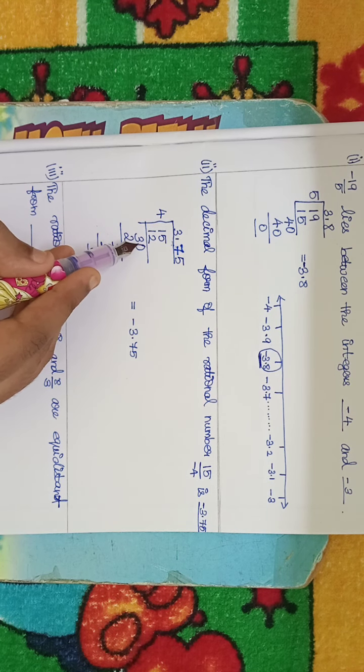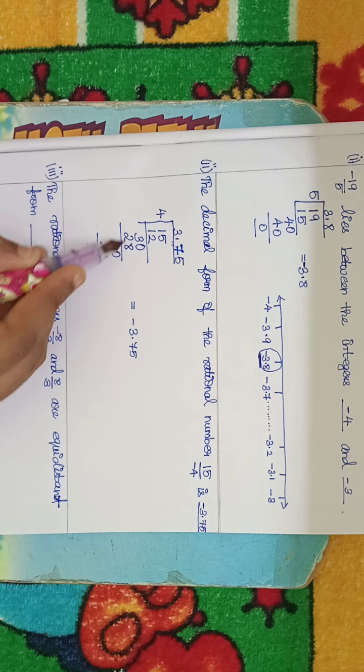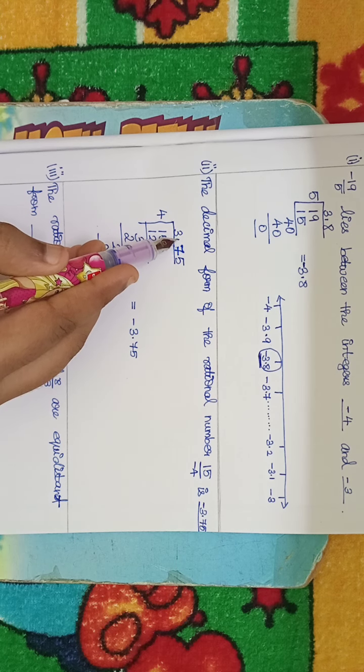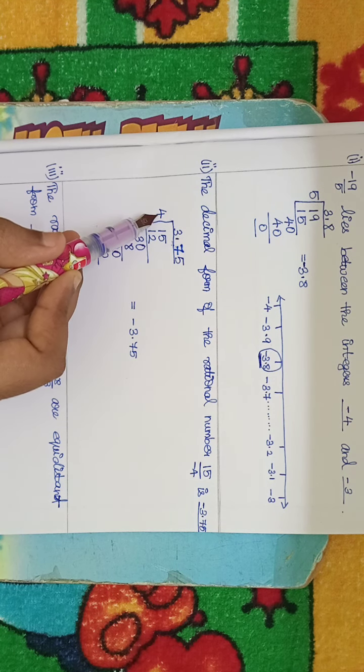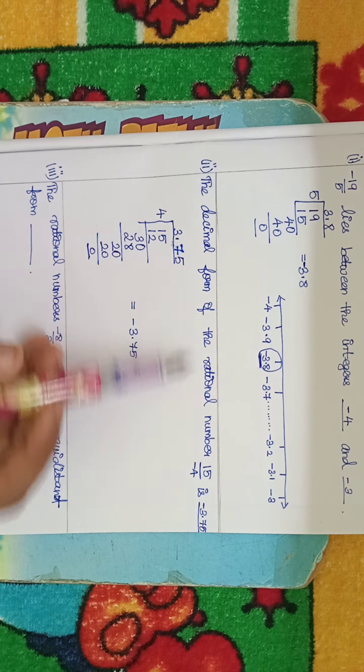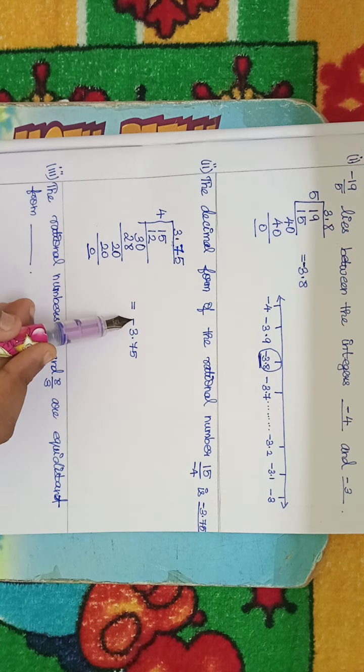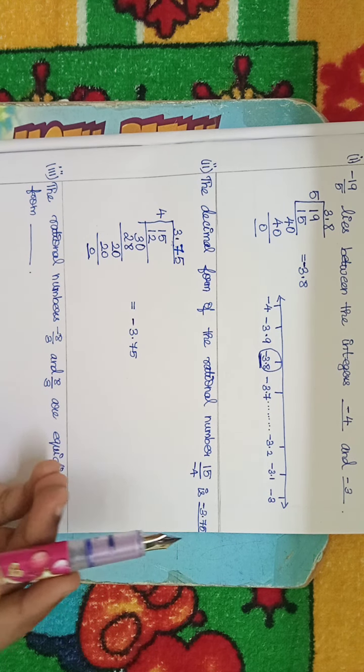Minus 4, minus 3. Balanced 2, 0. 4, 5, 0, 20, balanced 0. Is equal to minus 3.75. Answer: minus 3.75.